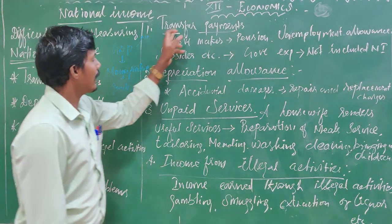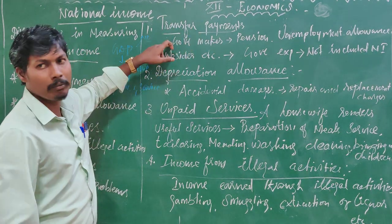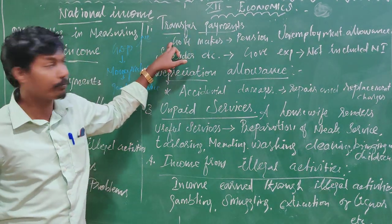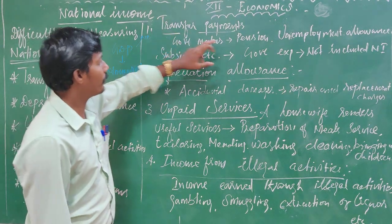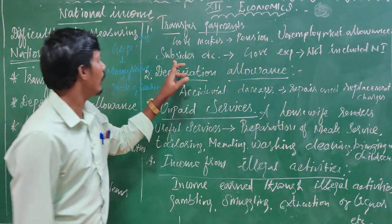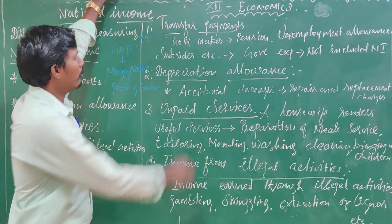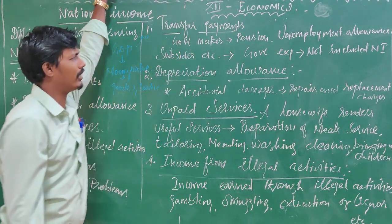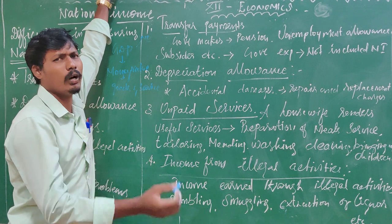First type: transfer payments. Transfer payments — the government makes payments such as pension, unemployment allowance, and subsidy, etc. Transfer payments are not included in national income because they are not against any productive service.